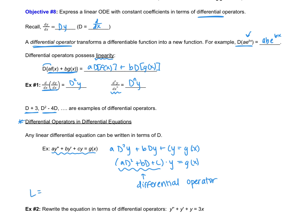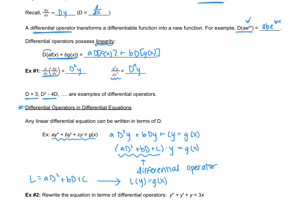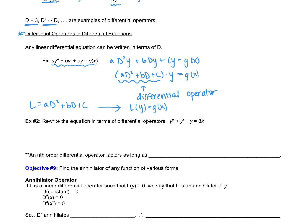We might define L to be the operator aD² + bD + c, so the equation becomes L(y) = g(x). In example 2, we rewrite the equation using differential operators, getting (D² + D + 1)·y = 3x. That's just another way of rewriting the equation.